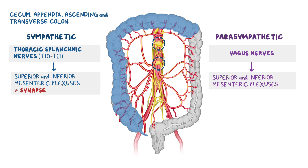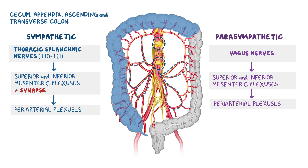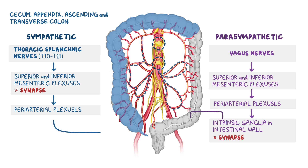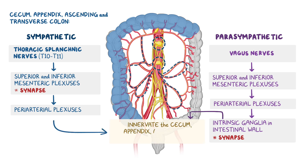Both nerve pathways pass through to the periarterial plexuses, where the parasympathetic fibers will eventually synapse to their postsynaptic fibers through intrinsic ganglia located within the intestinal walls. After synapsing in their respective ganglia, both nerve pathways eventually go on to innervate the cecum, appendix, ascending, and transverse colon.